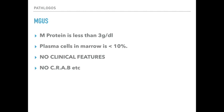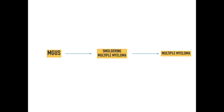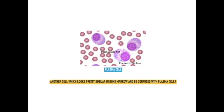MGUS patients have no clinical features or CRAB features like hypercalcemia, renal failure, anemia, or bone lytic lesions. Smoldering myeloma is the term for the condition intermediate between MGUS and multiple myeloma. In smoldering myeloma, the serum monoclonal protein is more than 3 grams per deciliter — more than MGUS — and clonal marrow plasma cells are more than 10 percent, up to around 60 percent. There are no systemic symptoms and no CRAB features, but these patients have a higher risk of progression to multiple myeloma and therefore also require monitoring.